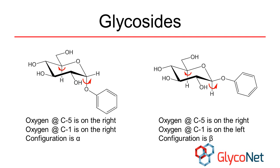If the oxygen is on the same side at both C1 and the furthest chiral carbon, then the configuration is alpha. If the oxygens are on different sides, the configuration is beta.